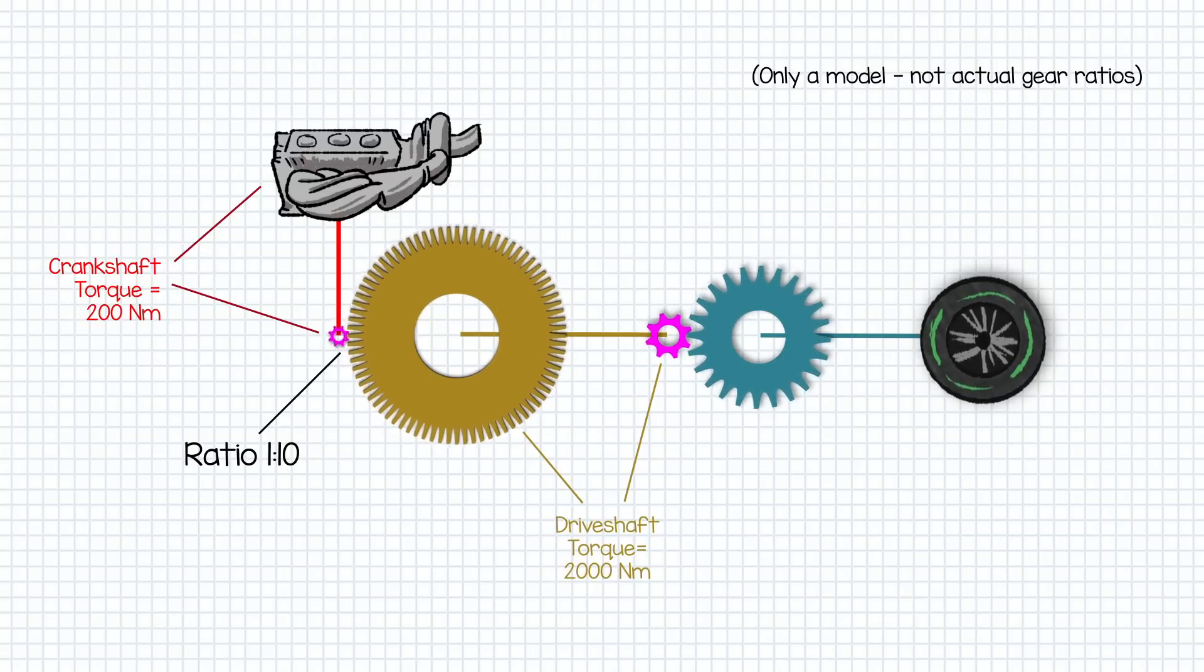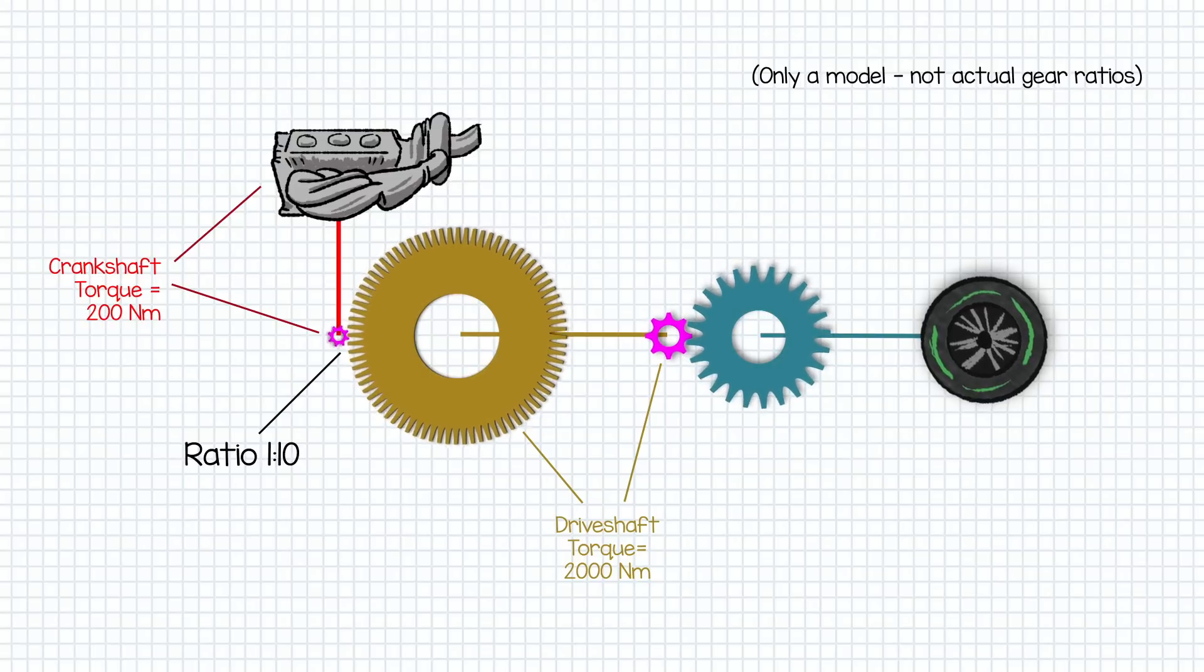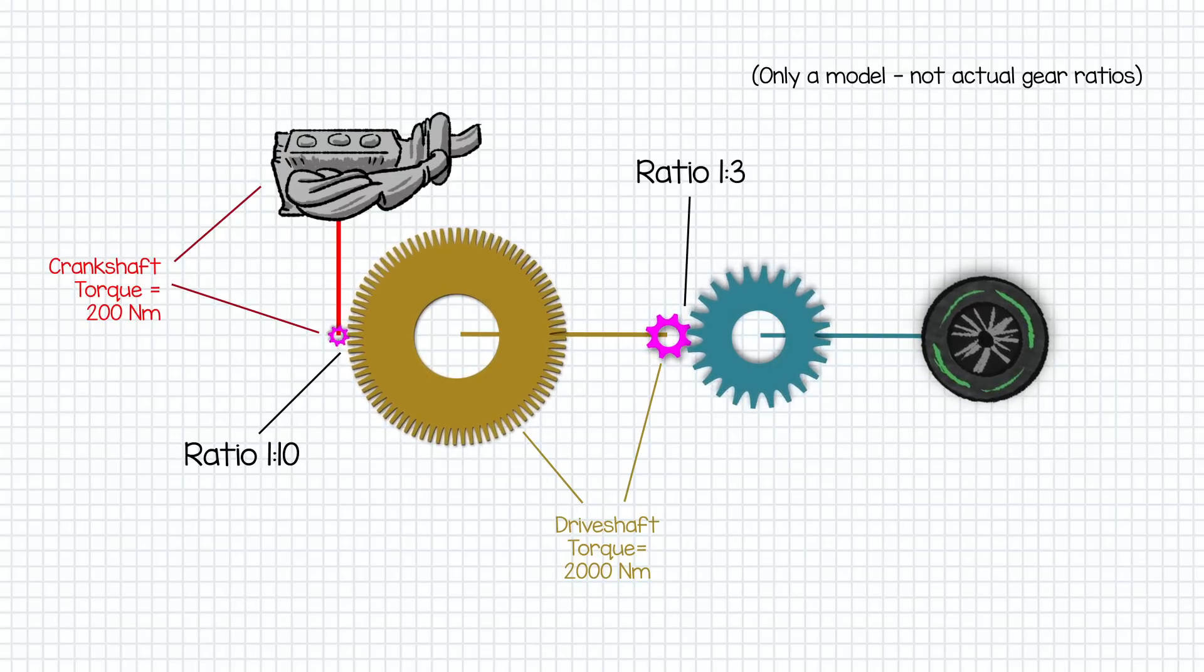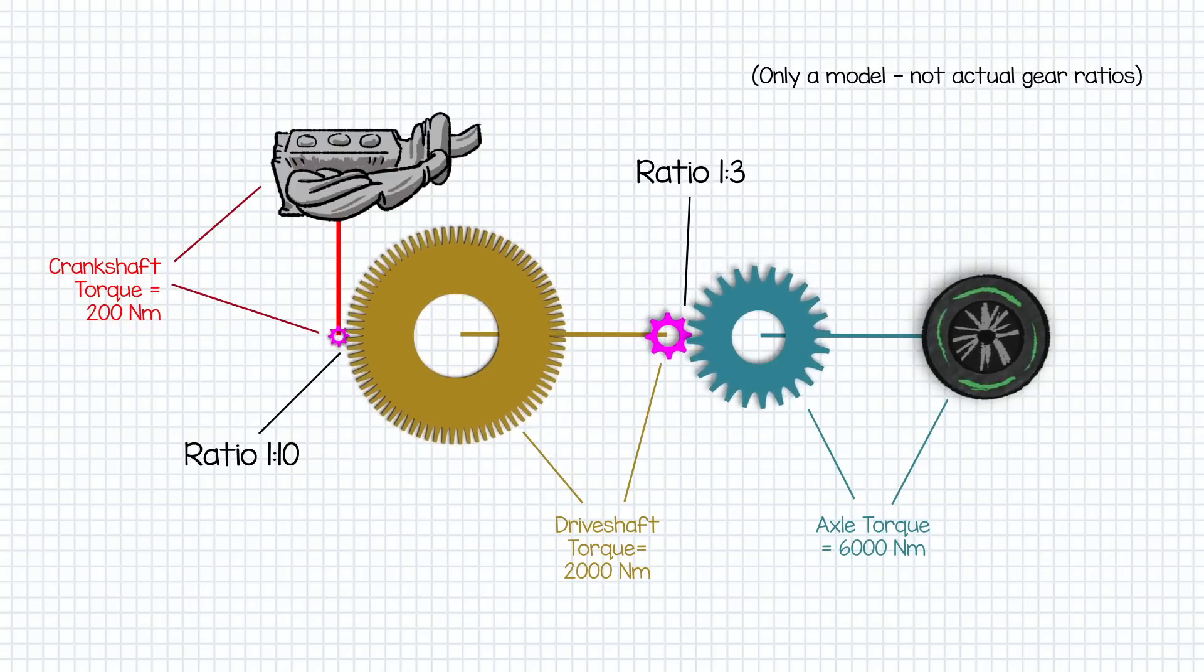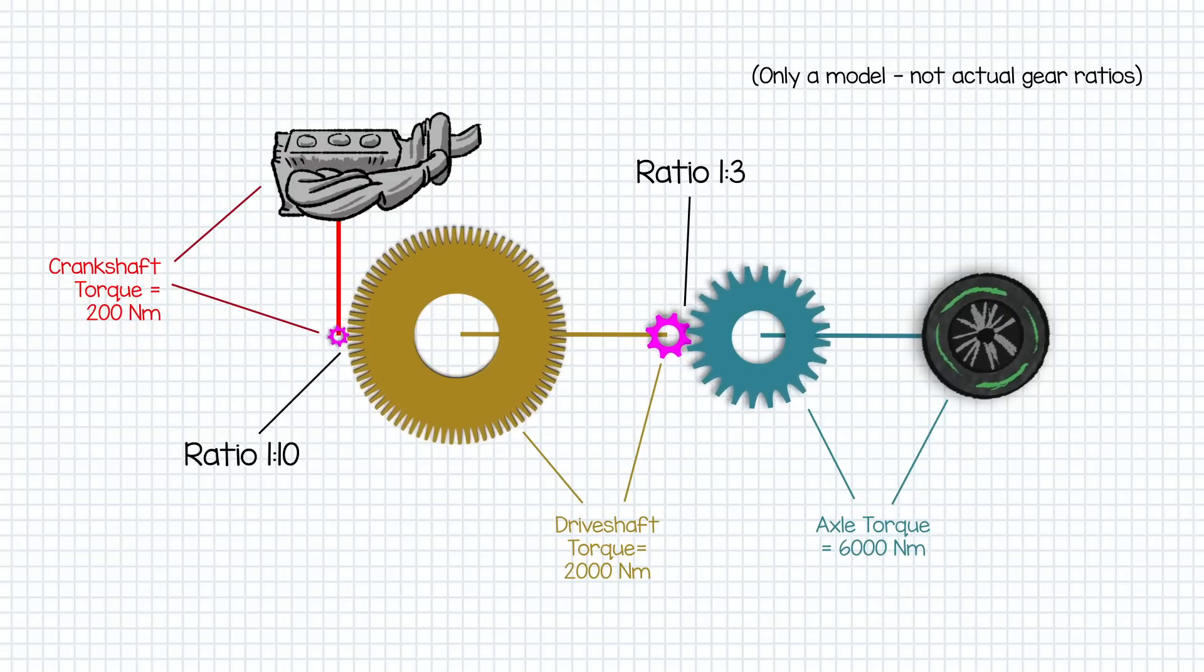The gear that converts this turning force to the axle remains constant and is probably around three to one so we then multiply the torque by three to give a final torque at the wheels of 6,000 newton metres. That's a good 30 times greater than the torque the engine delivers at the crankshaft.